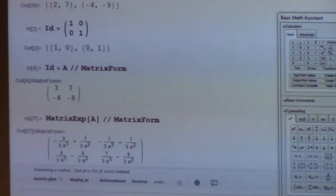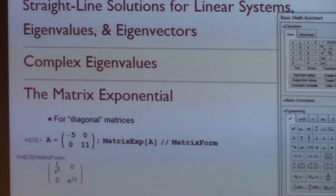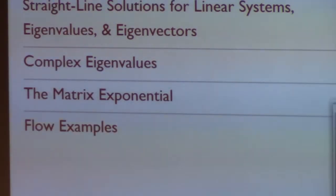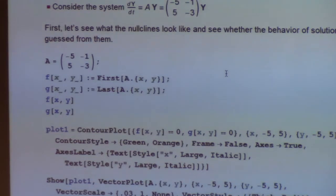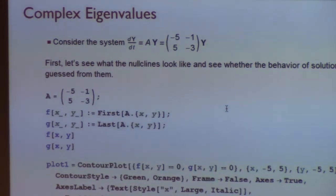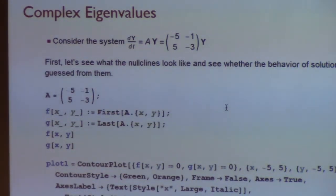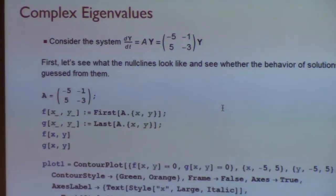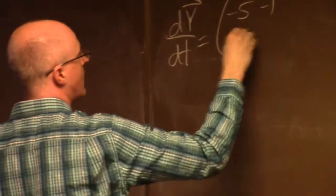All right, that took a lot of time. We're going to make use of the matrix exponential with flows, but I think I'd better do a complex eigenvalue example before I get into flows. We need to do a complex eigenvalue example. Our system in this example is dy/dt equals Ay, where A is the matrix negative 5, negative 1, 5, negative 3. Let's compute the eigenvalues of A.